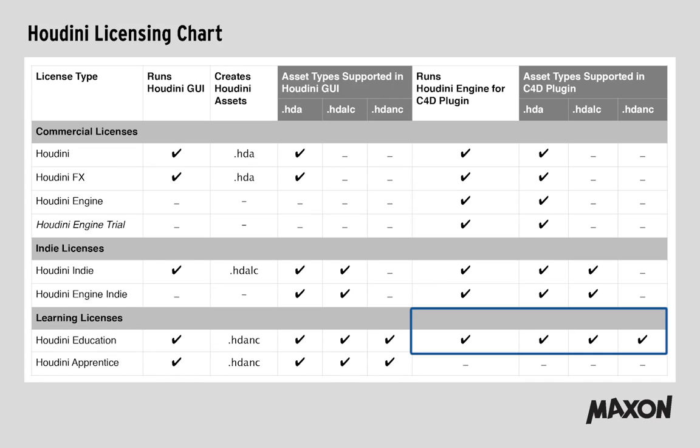If you have an educational license, you can load commercial, limited commercial, and non-commercial assets — HDA, HDALC, and HDANC — and again OTLs. For the Houdini Apprentice license, there is no Houdini engine available.